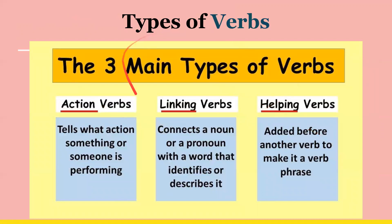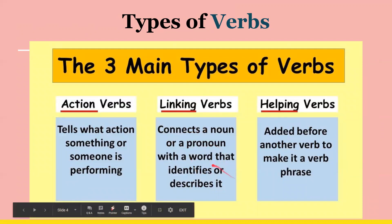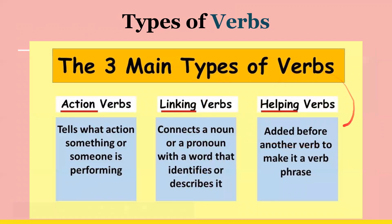Now these are three types of verbs. We have action verbs, which tell what action something or someone is performing. Linking verbs, which connect a noun or pronoun with a word that identifies or describes it. And helping verbs, which are added before another verb to make it a verb phrase.